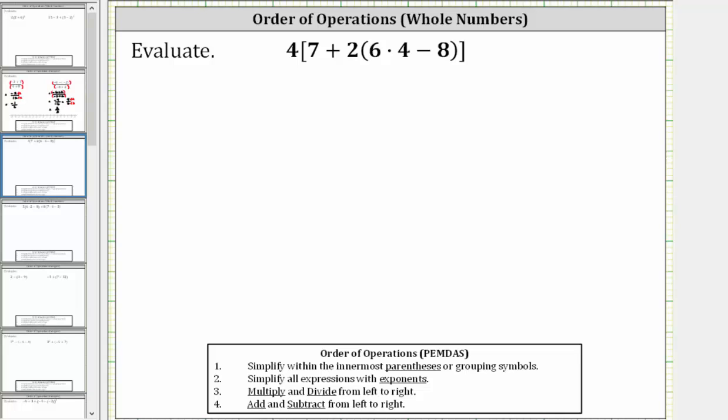We want to evaluate the given expression. The first step on the order of operations is to simplify within the innermost parentheses or grouping symbols. Notice our expression has two types of grouping symbols: we have parentheses as well as brackets.